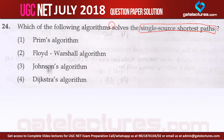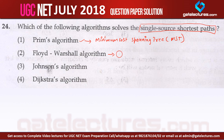This is one of the easiest questions you can get in this examination. Prim's algorithm is used to find the minimum cost spanning tree, also called MST. Next, Floyd-Warshall algorithm is used to find all-pair shortest path. Johnson's algorithm is also used to find all-pair shortest path.